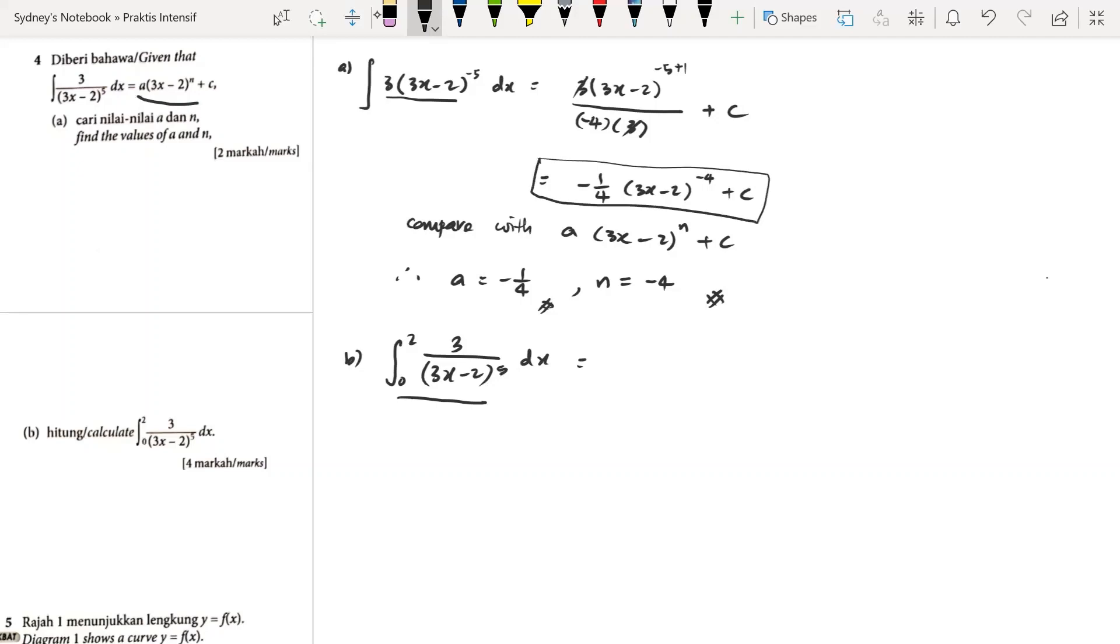But this time, we don't have to put c because this is the definite integral with the boundaries. So we just copy that and I will rewrite it such that I have a positive index, (3x minus 2) raised to the power of 4, with the square bracket and put the boundary 0 to 2.